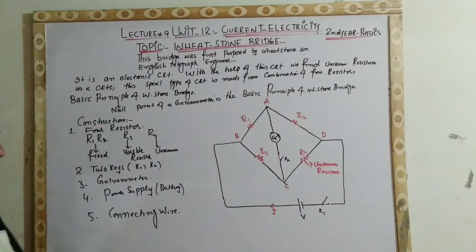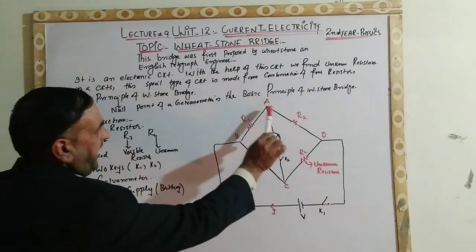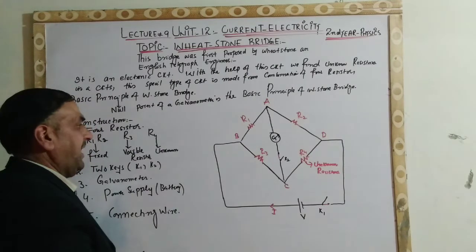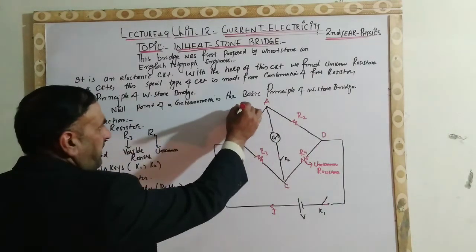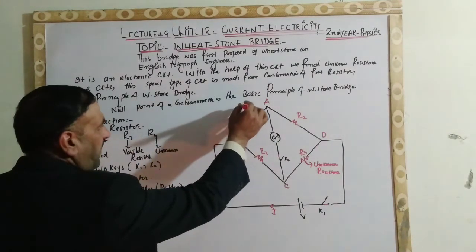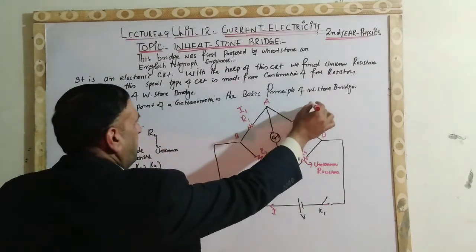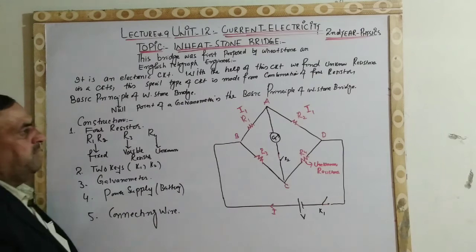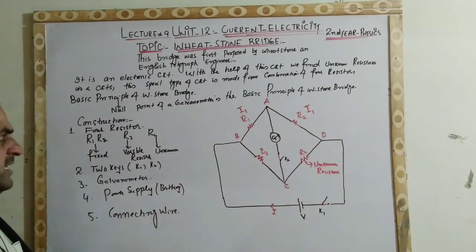If we look at this circuit, then AB and AD are in series. In this series, current I1 flows. In a series circuit, current remains the same and voltage is divided.